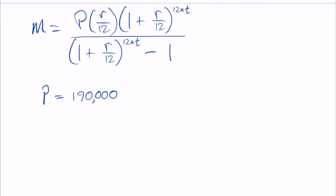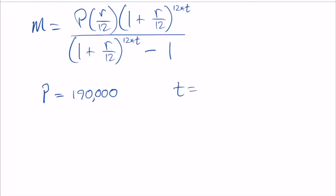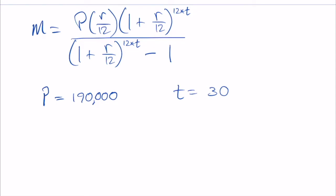The 30-year period is t, so t is going to be 30 years. That's that t that you see in this formula.